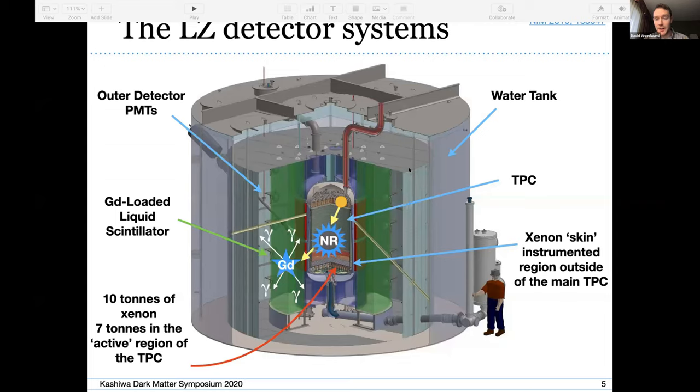The gadolinium has a high neutron capture cross-section, emitting gamma rays which we detect using outer detector PMTs. Those PMTs can also look for Cherenkov light from the water tank, so that can tag things like muons going through. The water tank itself is a big shield for ambient gamma rays and neutrons from the cavern rock.